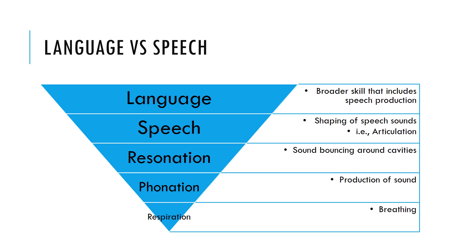Another way to look at it: we start from the bottom with respiration, which provides our air so we can get our voice or phonation through that production of sound. As we produce sound, it bounces around through our cavities. Once it gets up to the mouth, we can shape or articulate those sounds. Putting those sounds together and giving them meaning is language. Language encompasses speech, but speech can occur without language and vice versa.